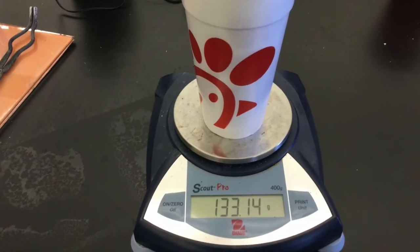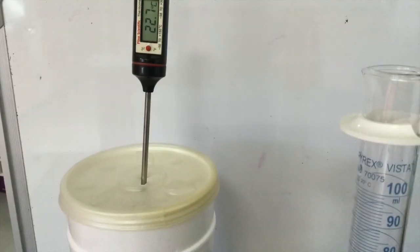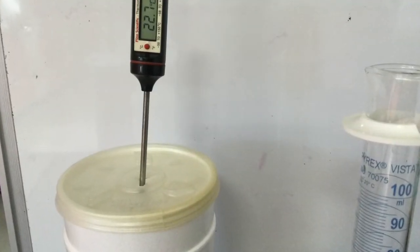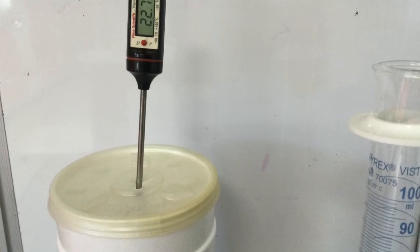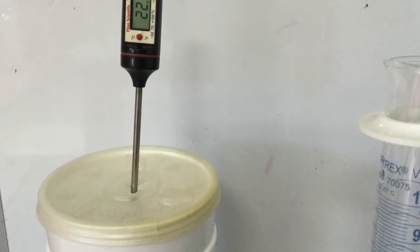Pour 100 milliliters of room temperature deionized water into your calorimeter. Then you will need to measure the temperature of the water in the calorimeter. Be sure to let it sit in the calorimeter for a couple of minutes to be sure that it has equilibrated.